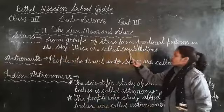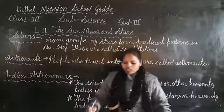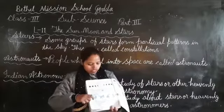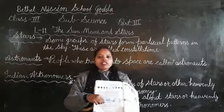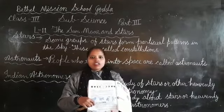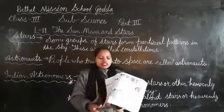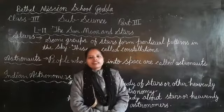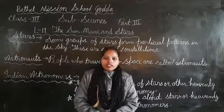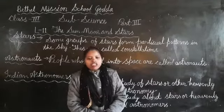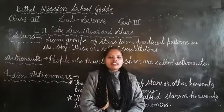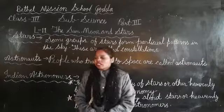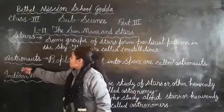These are called constellations. Look at the book — these are pictures of constellations. Some constellations are Great Bear, Scorpio, Auriga, and Leo, and there are 88 constellations in total.